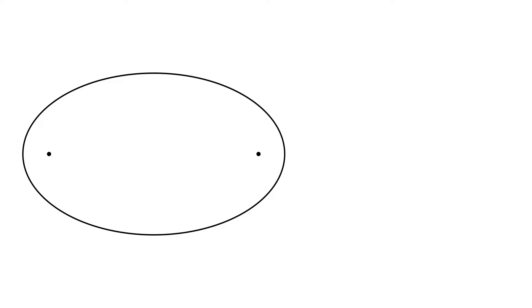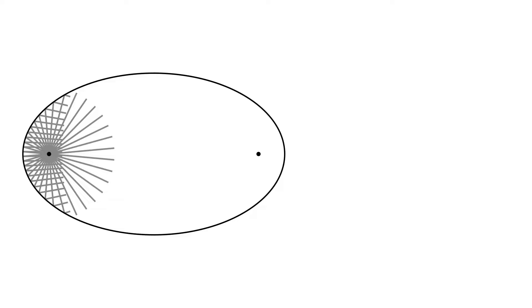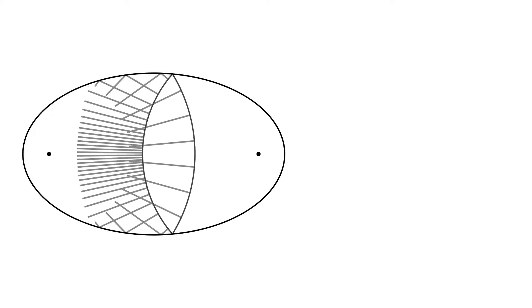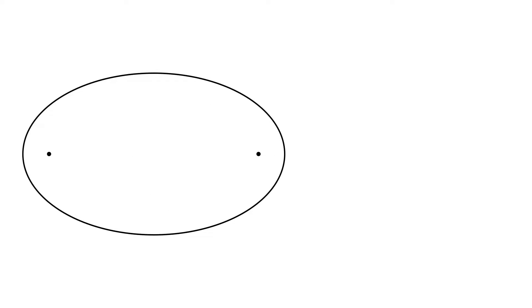We can also look at a light that shines in all directions. And if we connect all the frontmost points that the light has reached, we get what's called a wavefront. We can look at the wavefront on its own, and the entire wavefront will reach the other focal point at one instant.